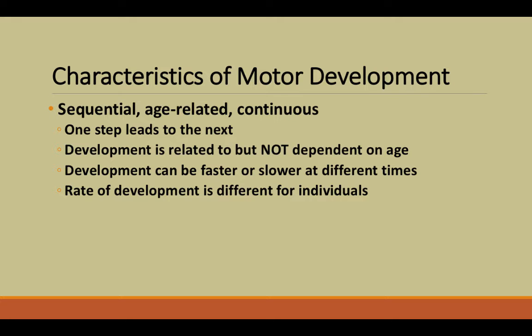One step leads to another, and development is related to but not entirely dependent on age. Development can be faster or slower at different times, and the rate of development is different for individuals, meaning there is variability between people. There's also variability at different times across the age lifespan.